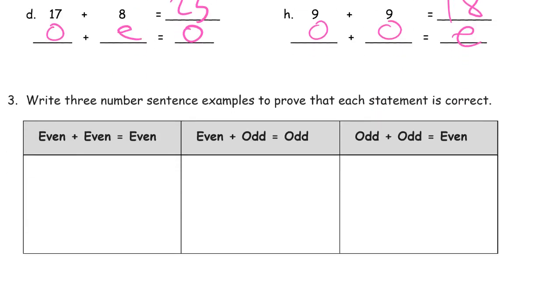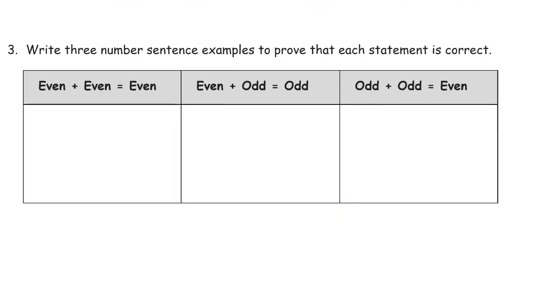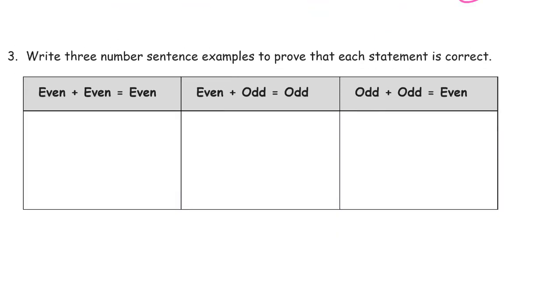Write three number sentence examples to prove that each statement is correct. So now you're going to have to, there's a lot of different right answers for this. And the ones I'm going to write are not the only ones that you can have that are going to be correct for this. Maybe you can think of your own. But if I add, I want examples that two even numbers added together will give me an even sum. So I need two even addends. Two plus two equals four. And I need three of these. Three examples for each statement. So what if I had six plus four? That's going to be ten. Right? Because they don't have to be doubles. And then just two even numbers. Twelve plus two. Fourteen.